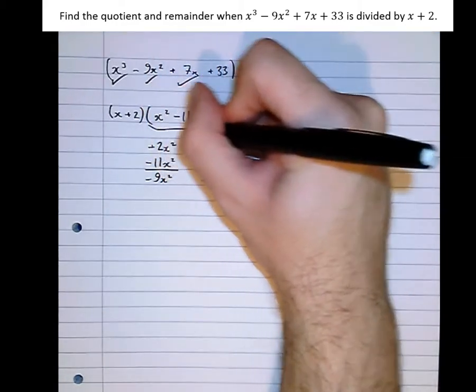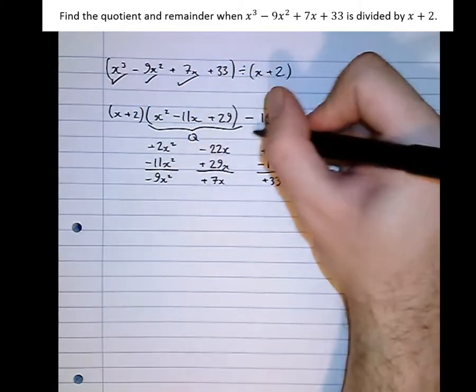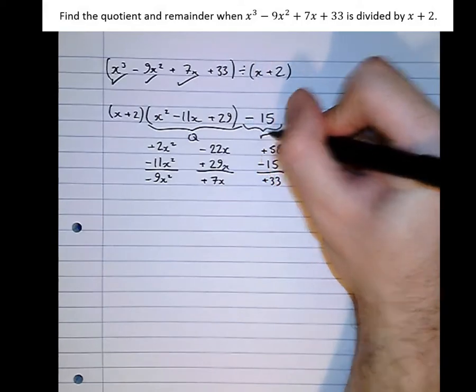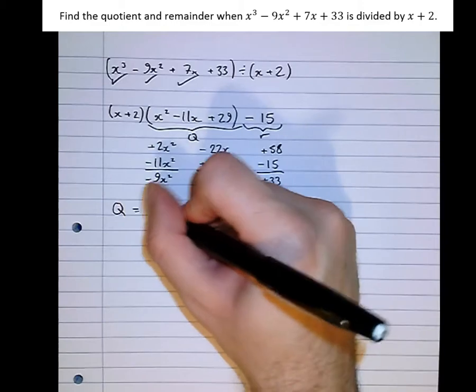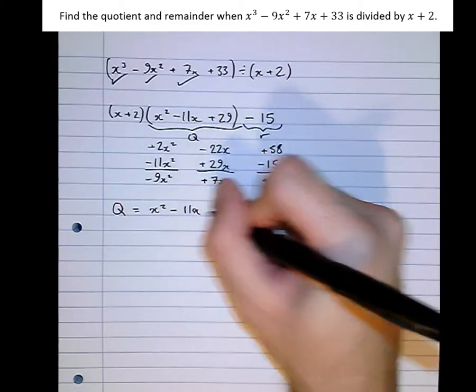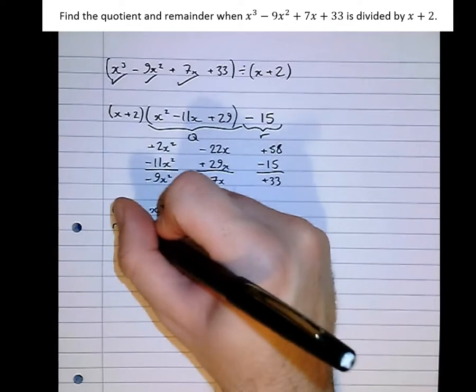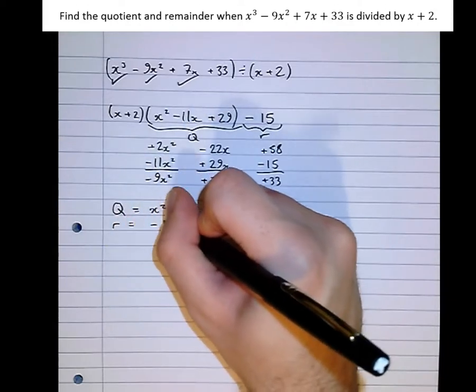And here's our quotient. And here's our remainder. So the quotient in this case is x squared minus 11x plus 29. And the remainder equals minus 15.